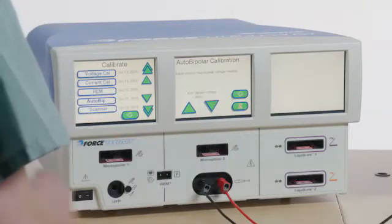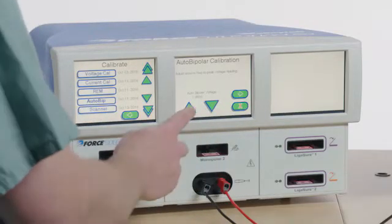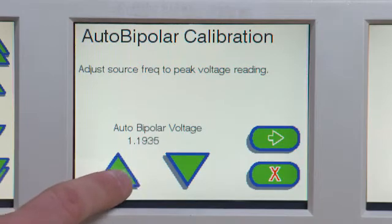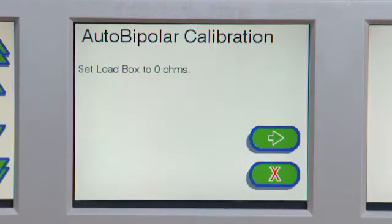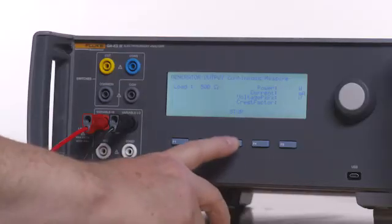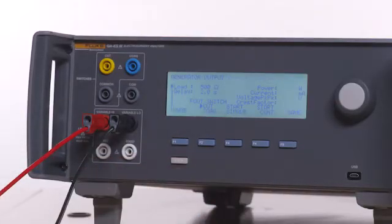Follow the on-screen instructions on the Force Triad to set peak voltage as displayed on the QAES-3. Press Next on the Force Triad when completed. Press F3 on the QAES-3 to stop the test.